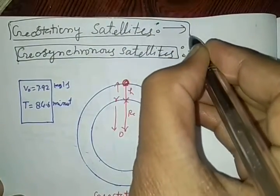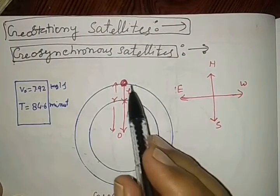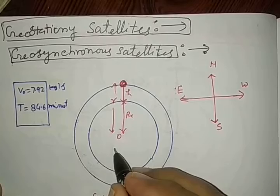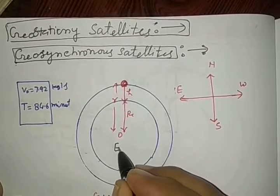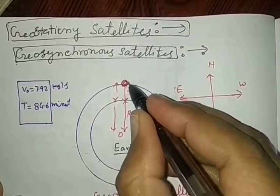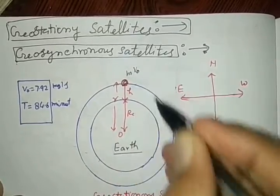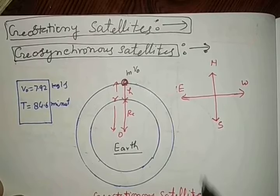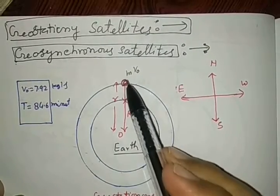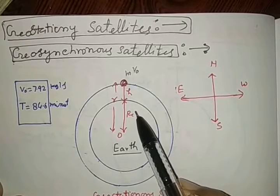Geostationary satellite is a satellite with time period of 24 hours and it always remains stationary with respect to the Earth. Let this be the Earth, the smaller circle is the symbol of Earth and the satellite which is at height h above the Earth's surface having mass m moving with orbital velocity v0. If time period is 24 hours it is said to be geostationary satellite and it always remains stationary with respect to the Earth.